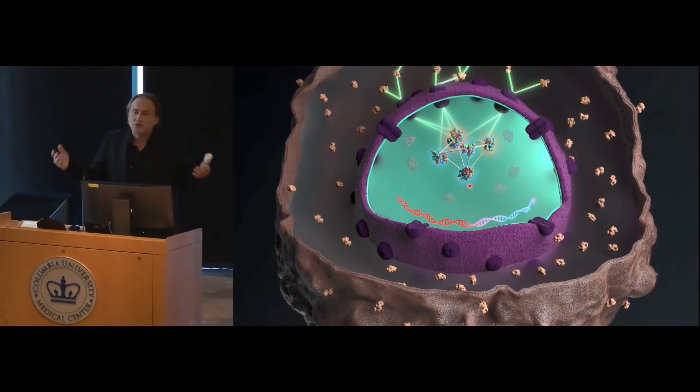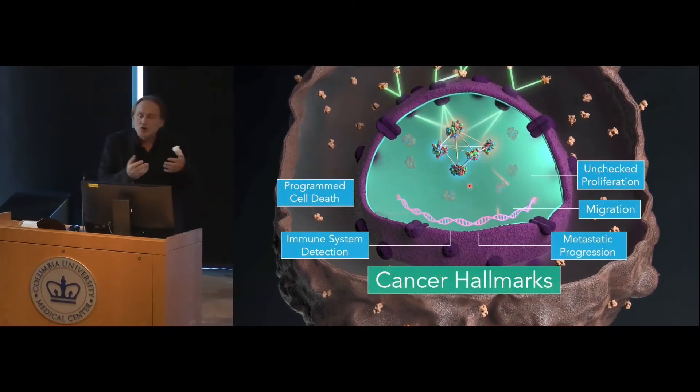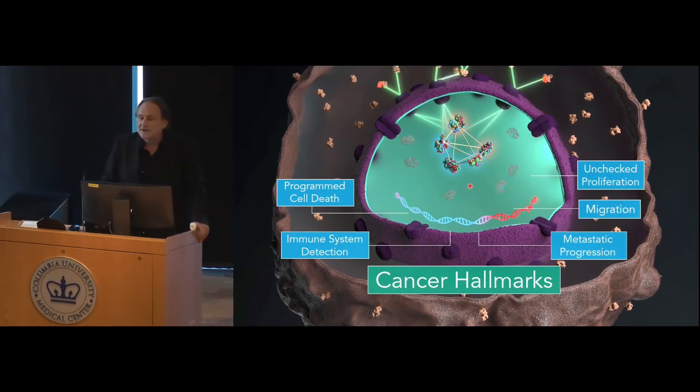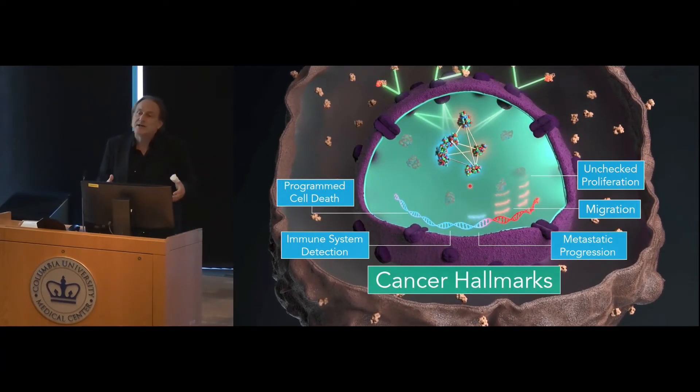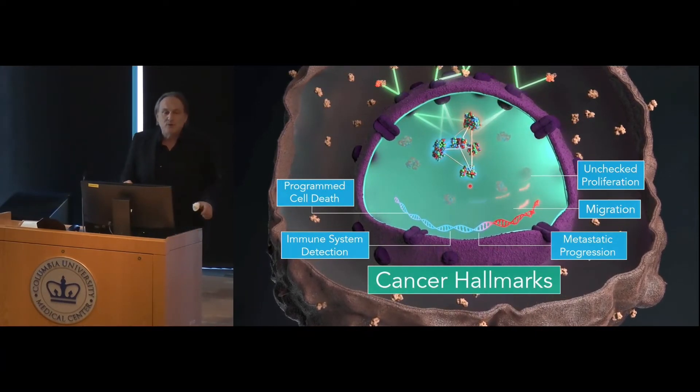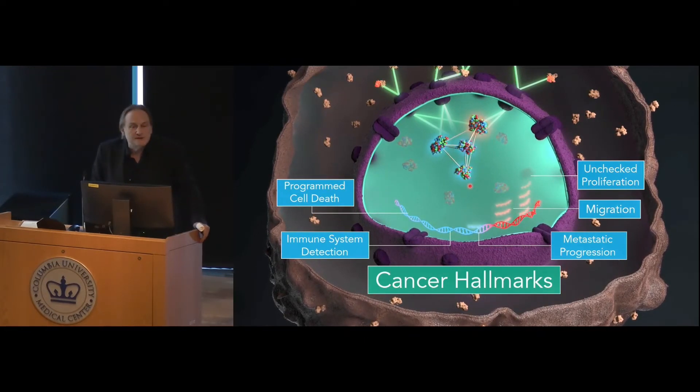For instance, they tell the cell to proliferate in an uncontrolled fashion. They tell the cell to stop responding to programs that signal. They tell the cell how to attract populations that will abrogate the ability of the immune system to detect it.